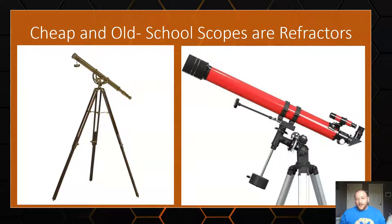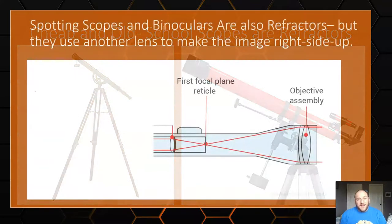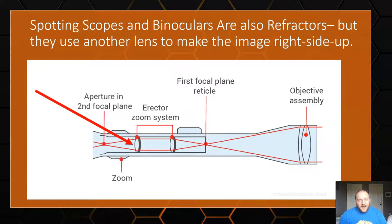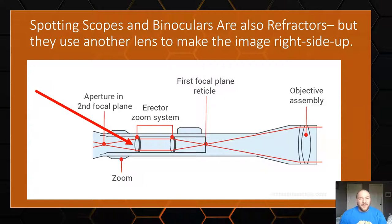One issue with refractors is the inverted image. All spotting scopes need a solution: they add another lens that flips the image back right-side up. You can flip images over every time you add a lens. However, when you add a lens, some light gets reflected and you lose a little. So astronomers don't add these extra lenses — they'd rather have the light than a right-side-up image. But for bird watching or hunting, you probably want that extra lens.